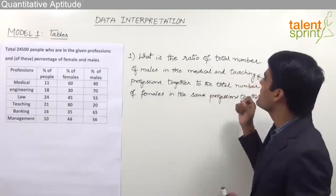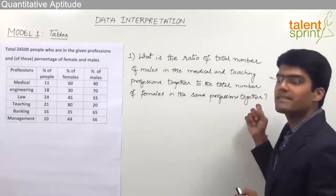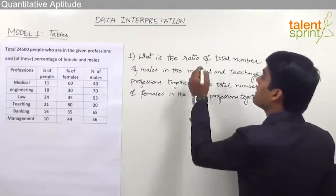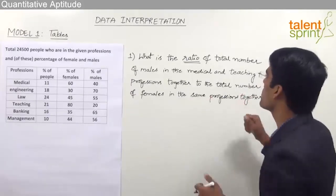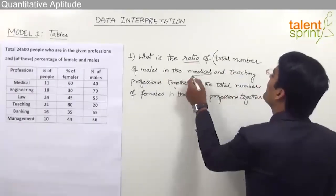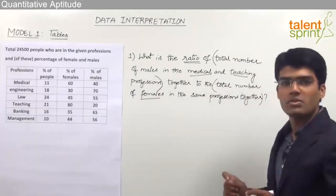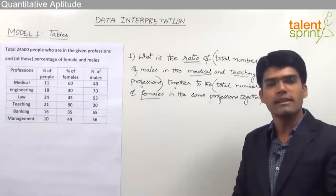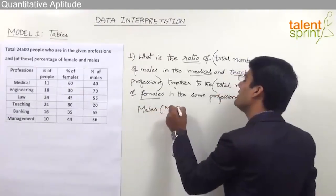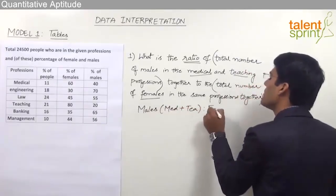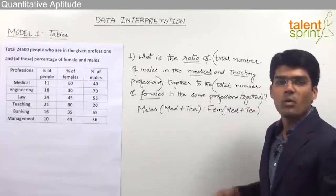The first question is: what is the ratio of total number of males in medical and teaching professions together to the total number of females in the same professions together? So this ratio is males in medical and teaching combined, to females in medical and teaching combined. Let us find out each of these values and see what the answer is.